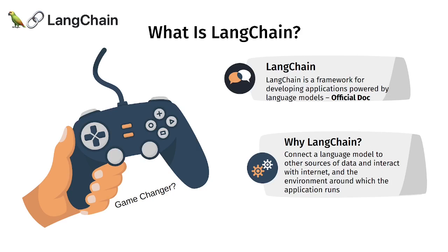LangChain is basically a game changer. It enables you to connect your application to large language models and also allows you to interact with different data sources. For example, you can build a chatbot for an e-commerce store that answers questions about your products, combining your specific data with the power of LLMs to respond in a friendly, ChatGPT-like way.